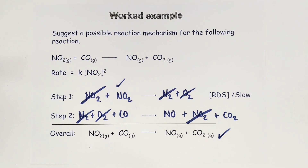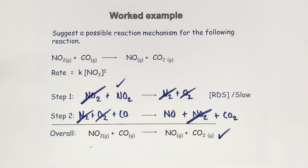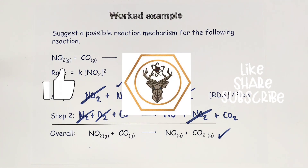So there you have it — three different ways of solving the same problem. The key thing is making sure you hit your two criteria: that your mechanism's rate determining step is in agreement with the rate equation, and that by the end of your multi-step mechanism you have produced the overall equation required. I hope this helps you to better understand how to tackle what can be quite a challenging A-level question. Take care — bye now.